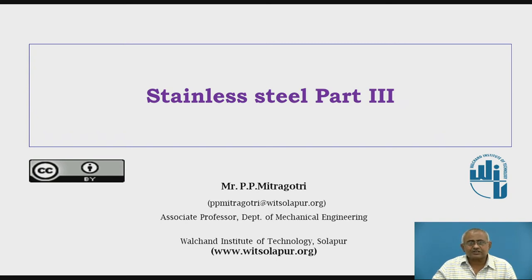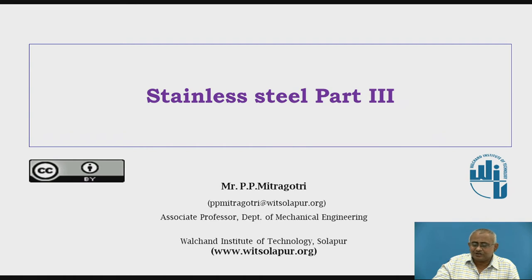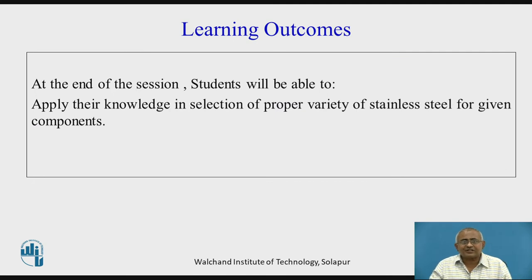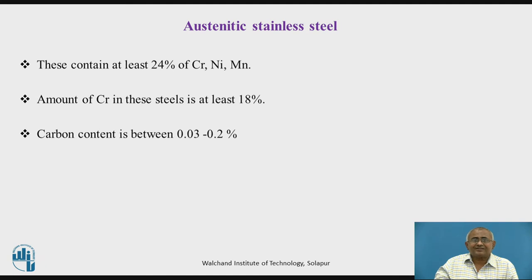In earlier two sessions, we have studied about Group A variety of stainless steels, that is martensitic stainless steel, and Group B variety of stainless steels, that is ferritic stainless steels. In this session, we are going to discuss about austenitic stainless steels. The outcome of this session will be that students will be able to apply their knowledge in selection of proper variety of stainless steel for a given component. With this, I will begin introduction to austenitic stainless steels.